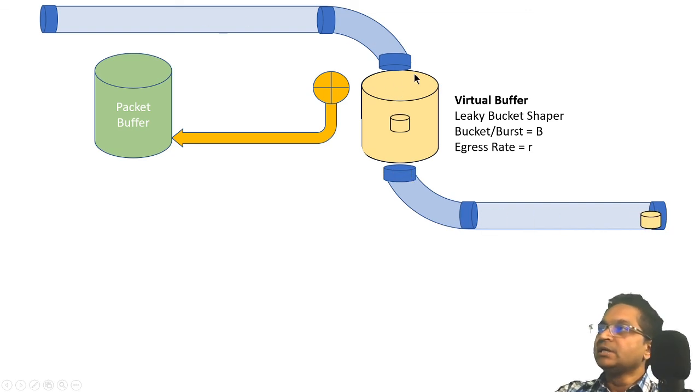You fill this at the rate at which packets are coming in till it fills up to the top, and then you drain it always at rate R. Then you use the feedback from this shaper to control the actual buffer in which packets are flowing in.